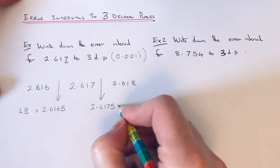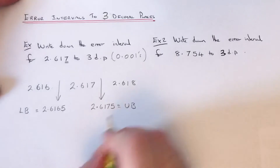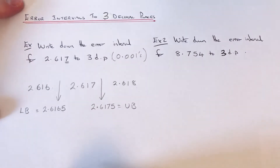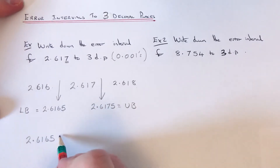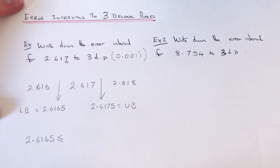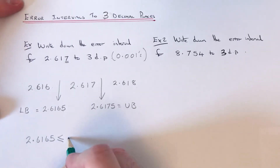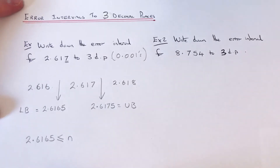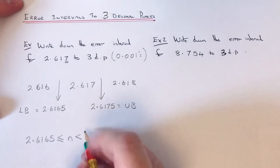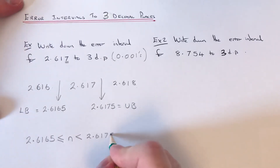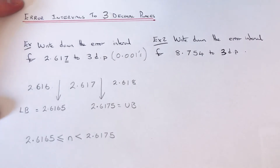So 2.6165 is our lower bound and 2.6175 is our upper bound. We can now write down the error interval: put the lower bound first, then a less than or equal to sign, then a letter in the middle — I'll use the letter n since we've just got a number rounded off — then a less than sign, and then the upper bound 2.6175. And that is our final answer.